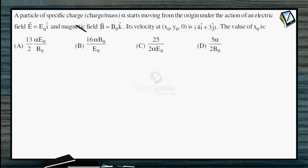The first thing is that q by m is given as alpha and the particle starts from origin, meaning initial velocity v1 is 0. When it reaches point x naught, y naught, 0, its velocity v2 becomes 4 i cap plus 3 j cap. The magnitude of v2 will be the square root of 16 plus 9, which equals 25, so it is 5 meter per second.